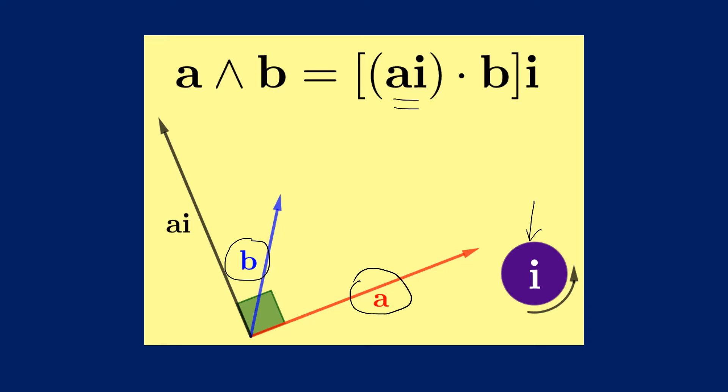We know from geometric algebra that if we right multiply any vector, in our case a, by the unit bivector of a plane that contains it, we get a 90 degree rotation of the original vector in the sense of rotation of the unit bivector.